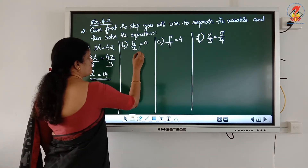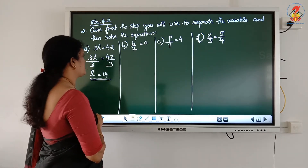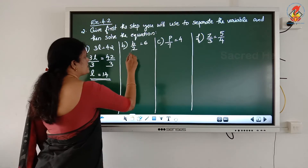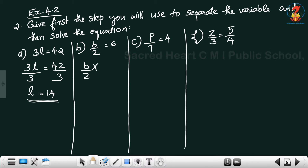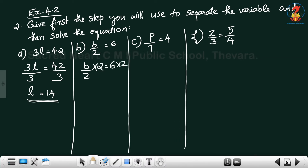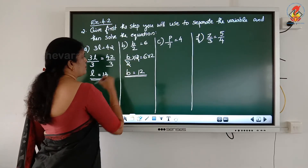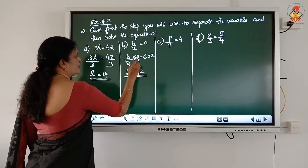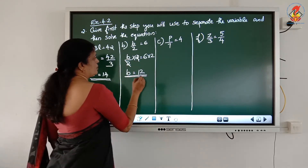The second question: B divided by 2 = 6. How can you eliminate this divided by 2? Multiply both sides by 2 — that means B divided by 2, multiplied by 2. The 2 and 2 cancel on the left-hand side, giving B = 12.